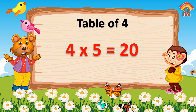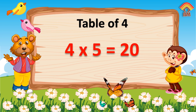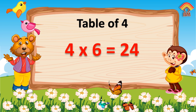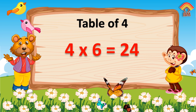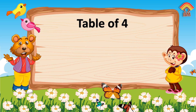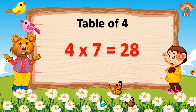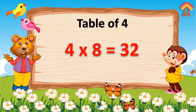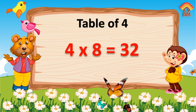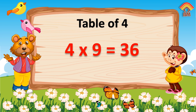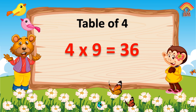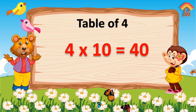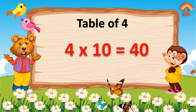Four fives are twenty. Four sixes are twenty-four. Four sevens are twenty-eight. Four eights are thirty-two. Four nines are thirty-six. Four tens are forty.